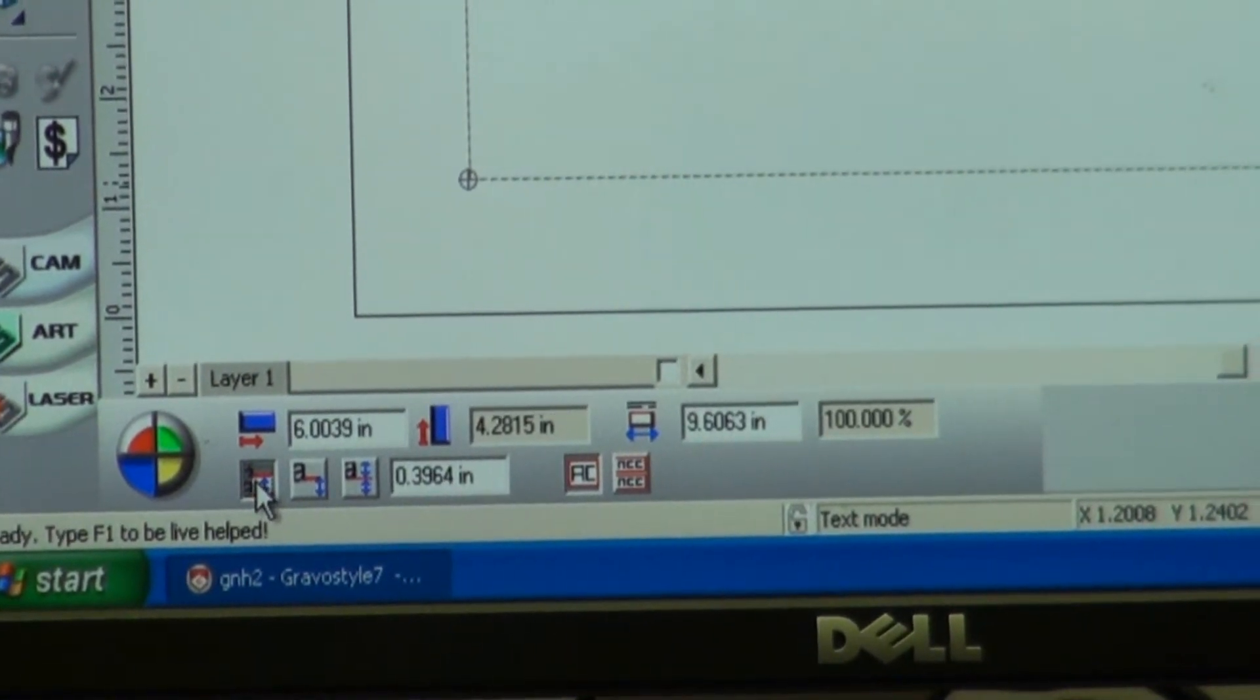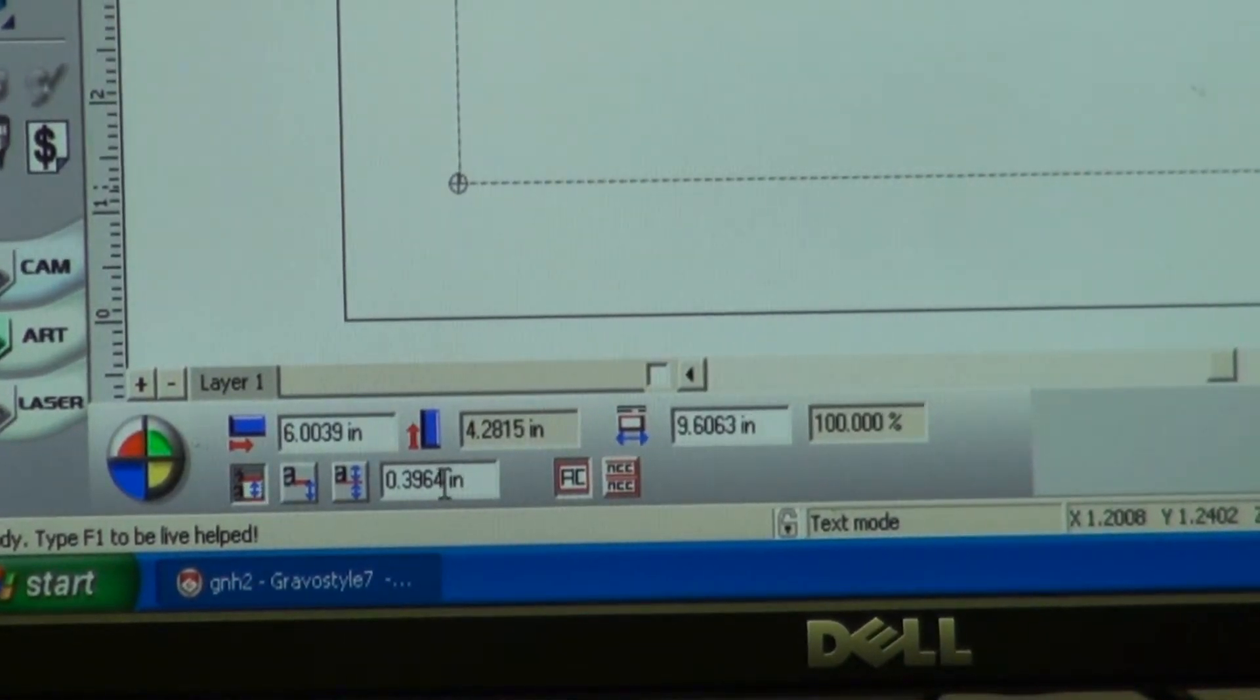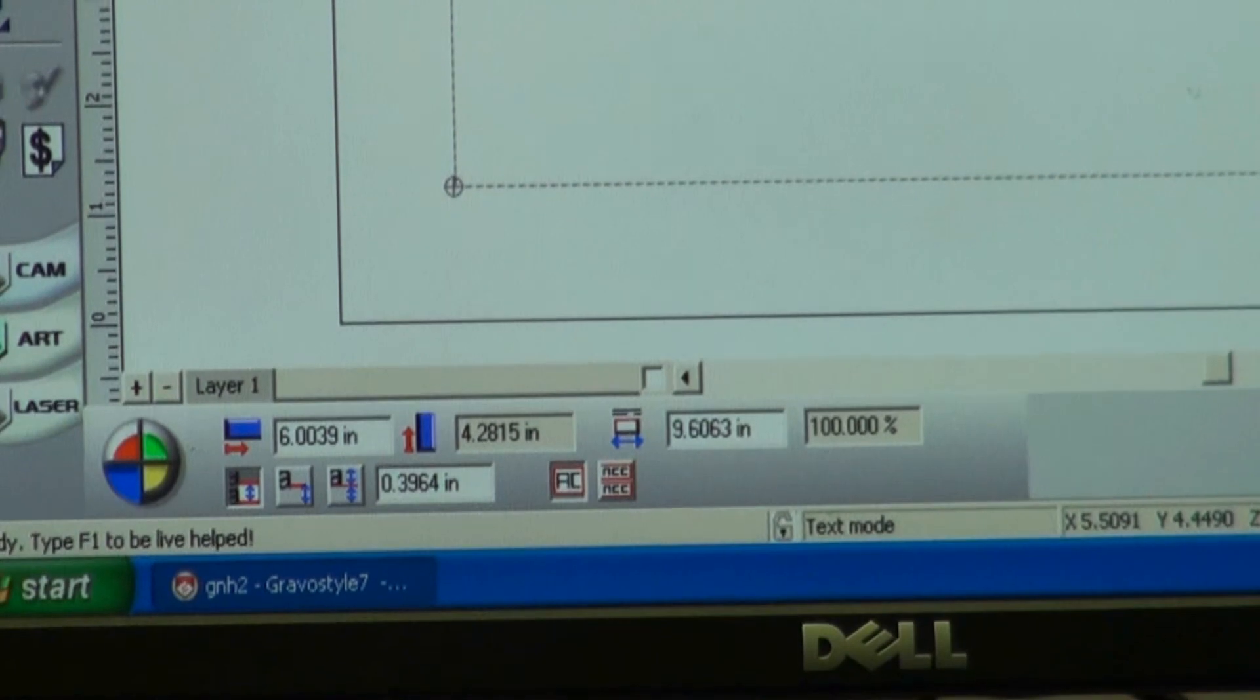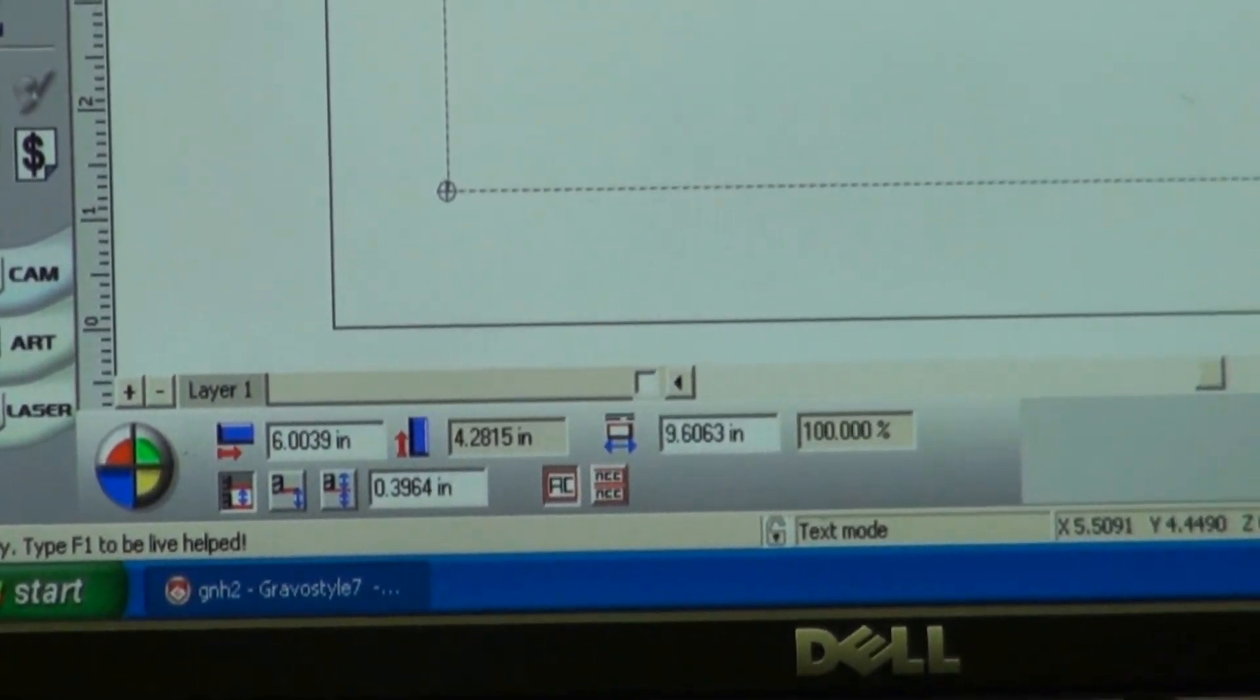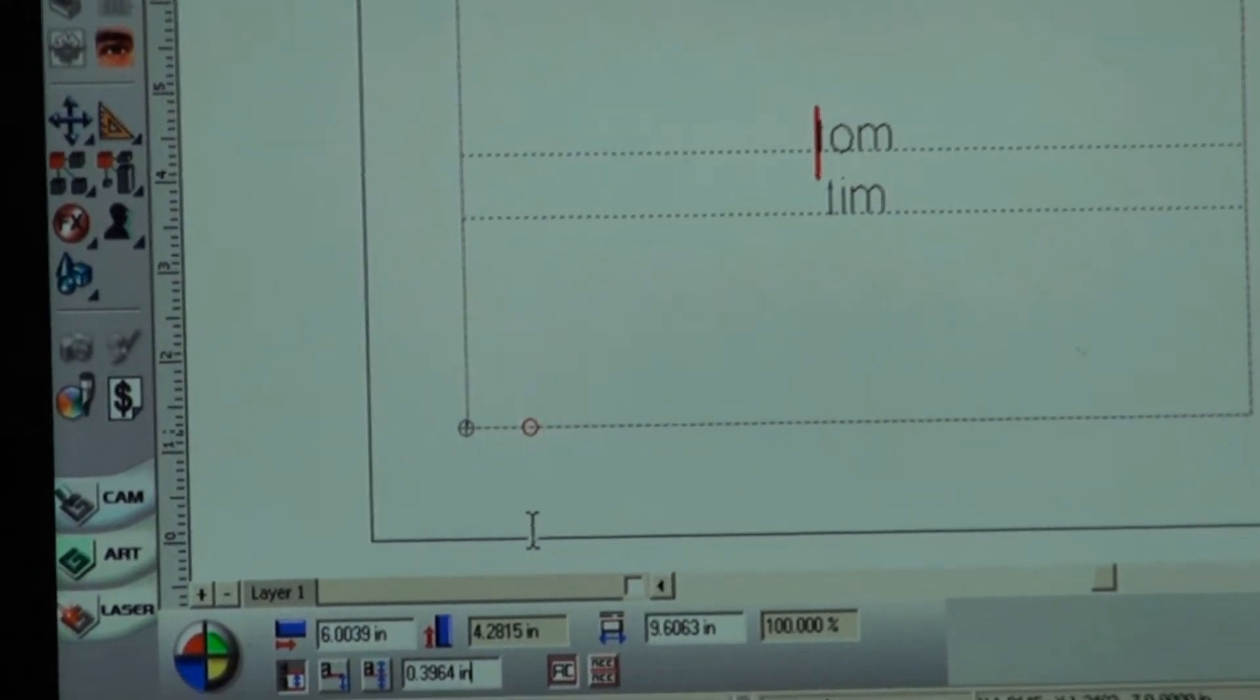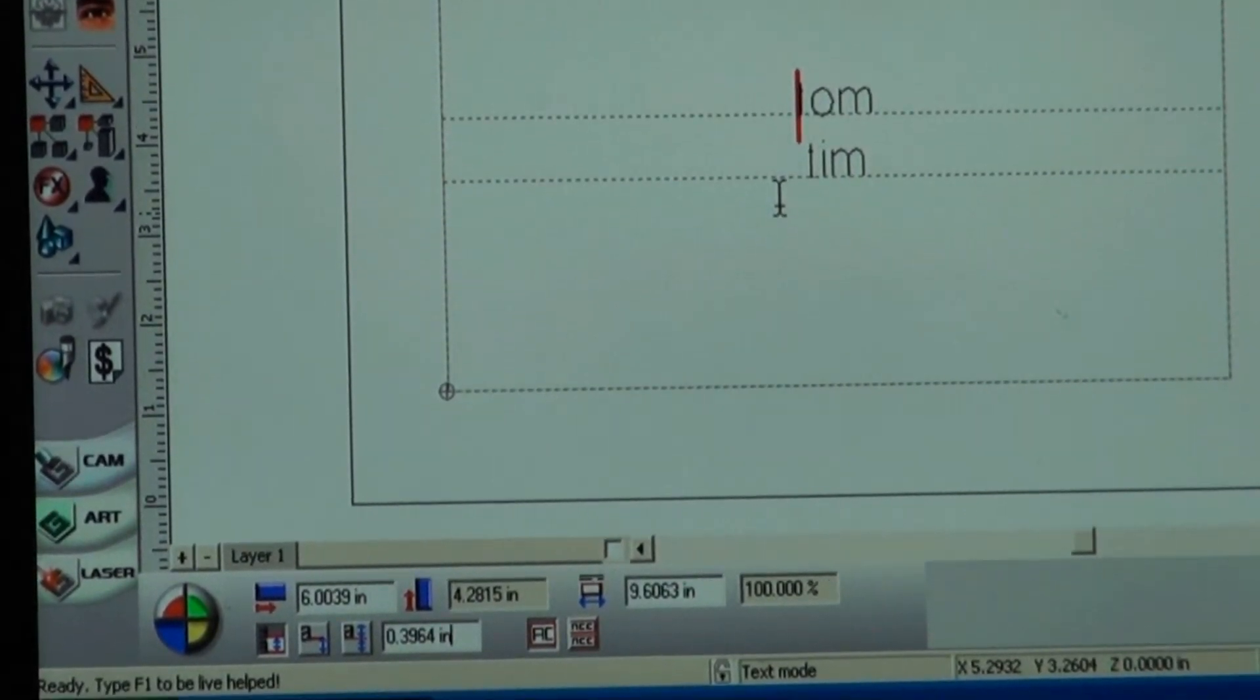All right. So when you click on the fixed line spacing, you'll see right to the right it'll give you a number. What that number tells you is when you are in the first line, that line tells you the exact distance that this line is from this line.